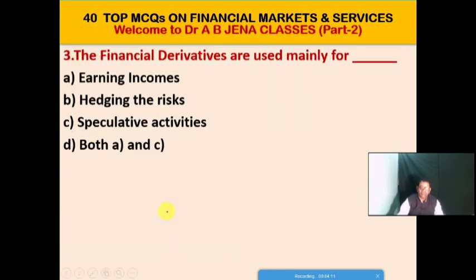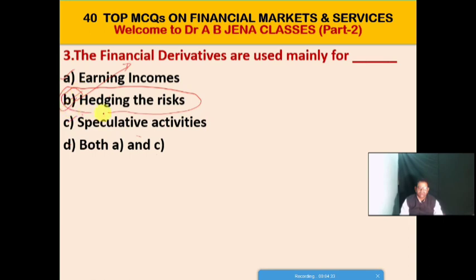Next MCQ: financial derivatives are used mainly for what? A: earning income, B: hedging the risks, C: speculative activities, D: both A and C. B is the right option. Financial derivatives are used mainly for hedging the risks.